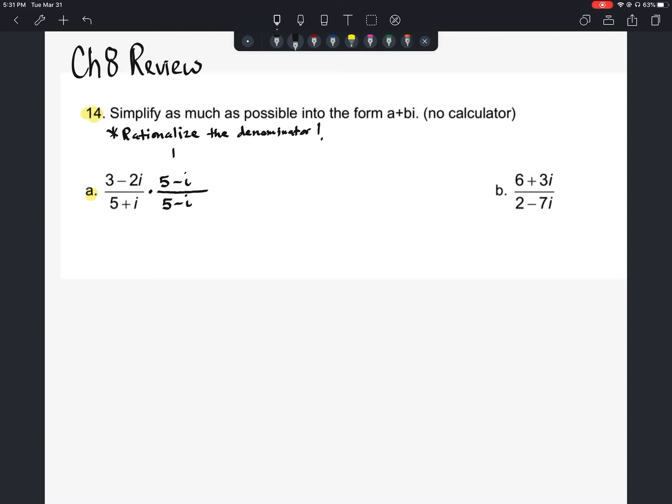So as we look to do this, we're going to multiply that denominator together first. When we do 5 plus i times 5 minus i, we'll end up with 25 minus i squared, which is like 25 minus negative 1, which would be 26 in our denominator.